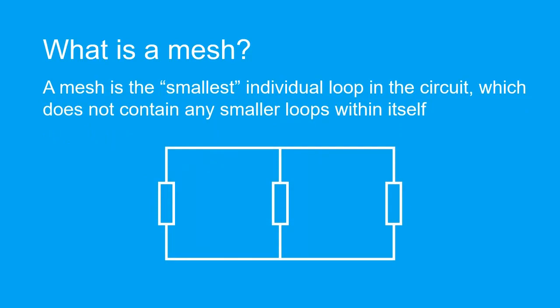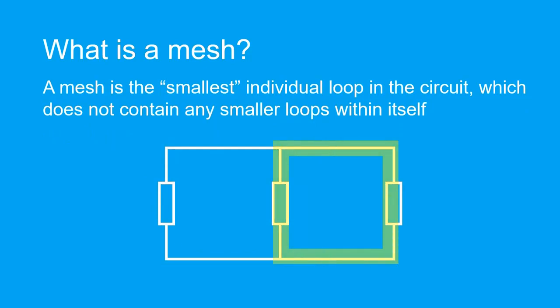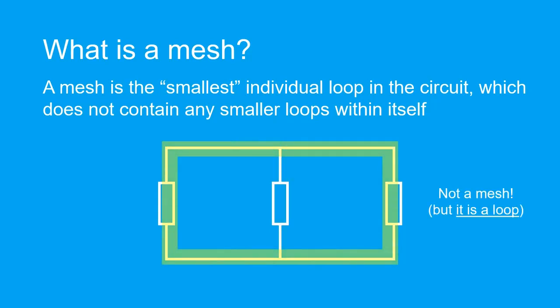For example, in this circuit, this is a mesh, and this is a mesh, but this is not a mesh. This is because we can see there are smaller loops within itself. We can still consider it as a loop nonetheless, so KVL still applies. Note that KVL applies to both loops and meshes.